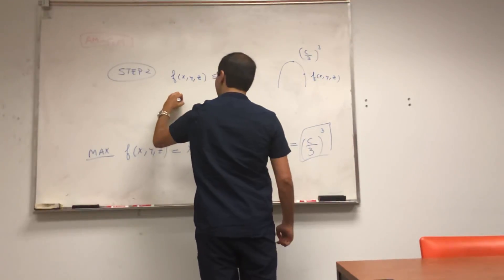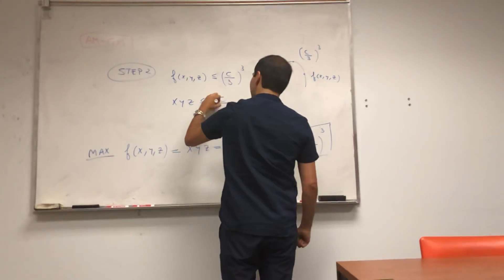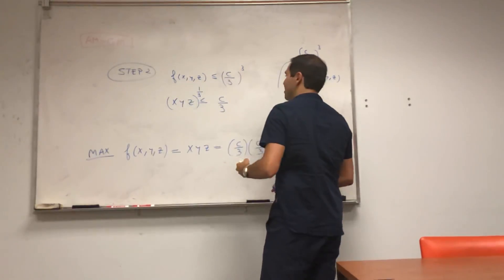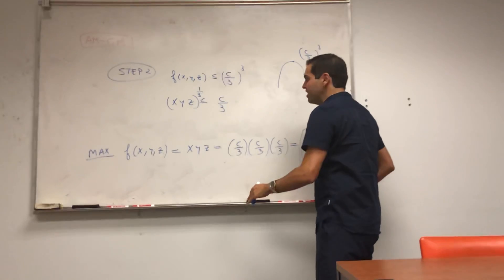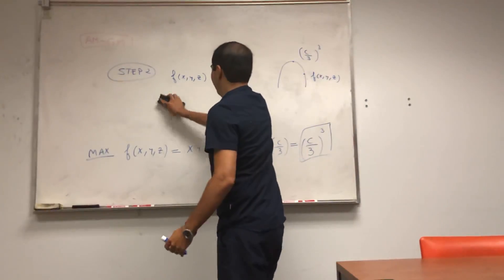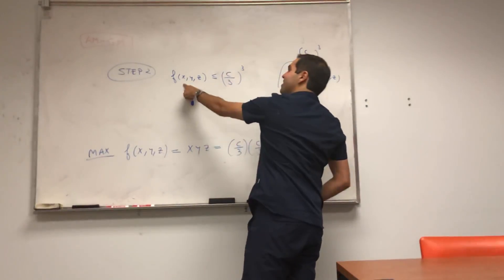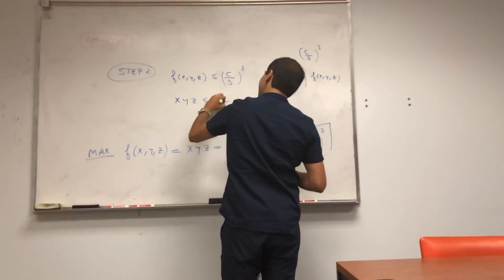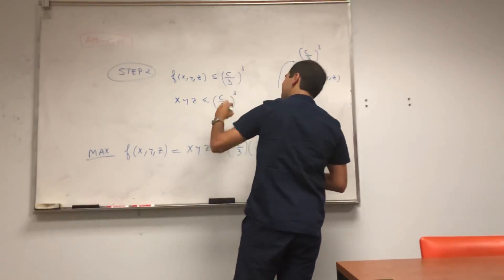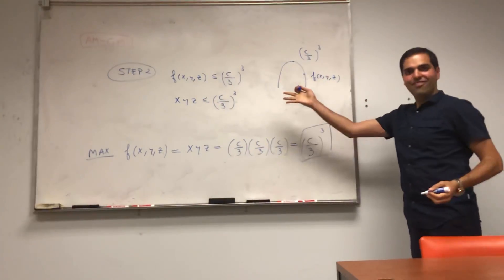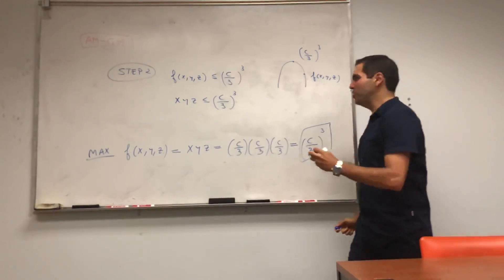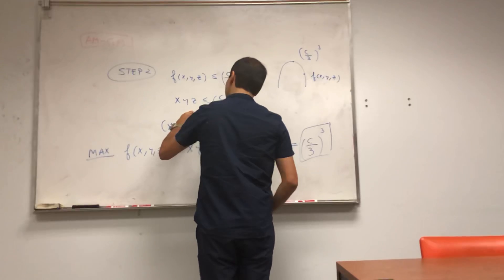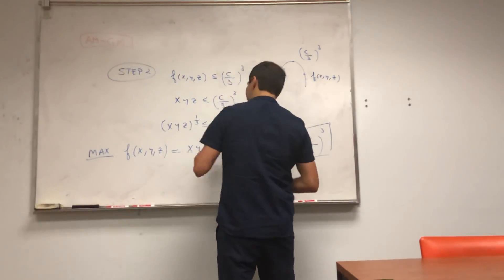And so in particular, x, y, z is less than or equal to the cube root, sorry, of x, y, z is less than or equal to c over 3. Sorry, again. So what we have is x, y, z is less than or equal to c over 3 cubed. That's by definition of f. Then take the cube root, and you get the cube root of x, y, z is less than or equal to c over 3.